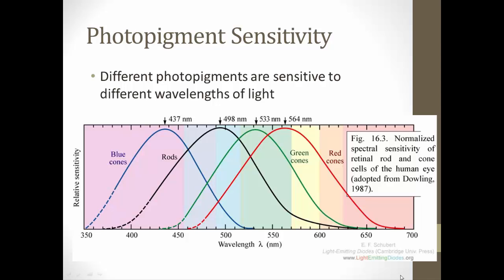Here's a picture showing the different sensitivities of the photopigments — they're all sensitive to different wavelengths. Blue cones respond to blue, green cones to green, and red cones to the red range. The brain interprets color based on the combination of cones that fire. For example, yellow causes a lot of red cones to fire and some green cones, and the brain interprets that combination as yellow.